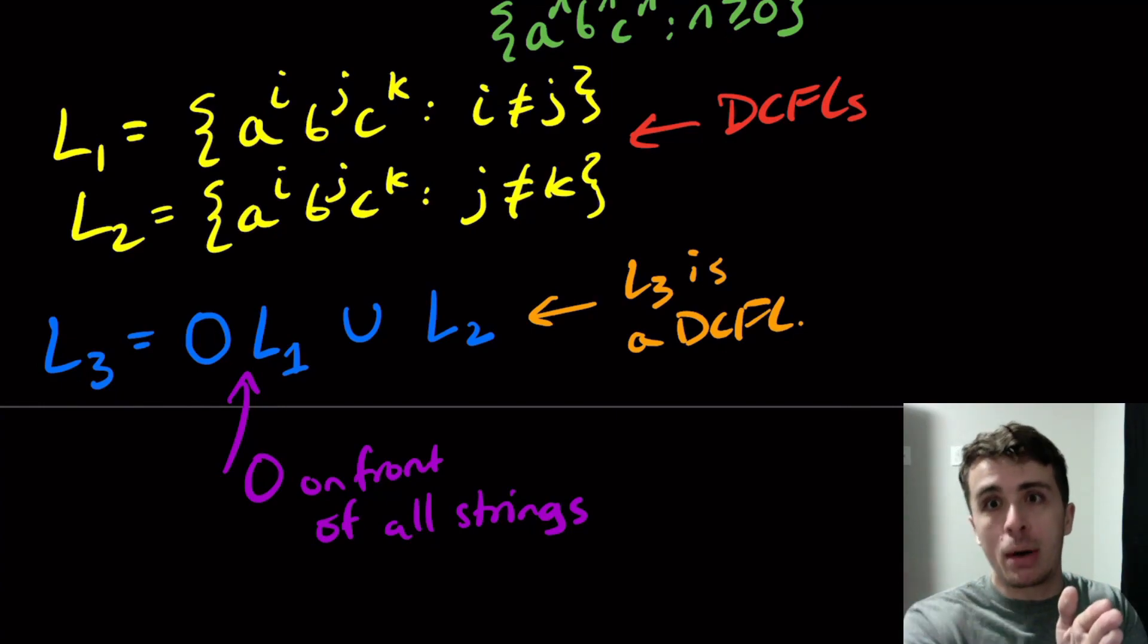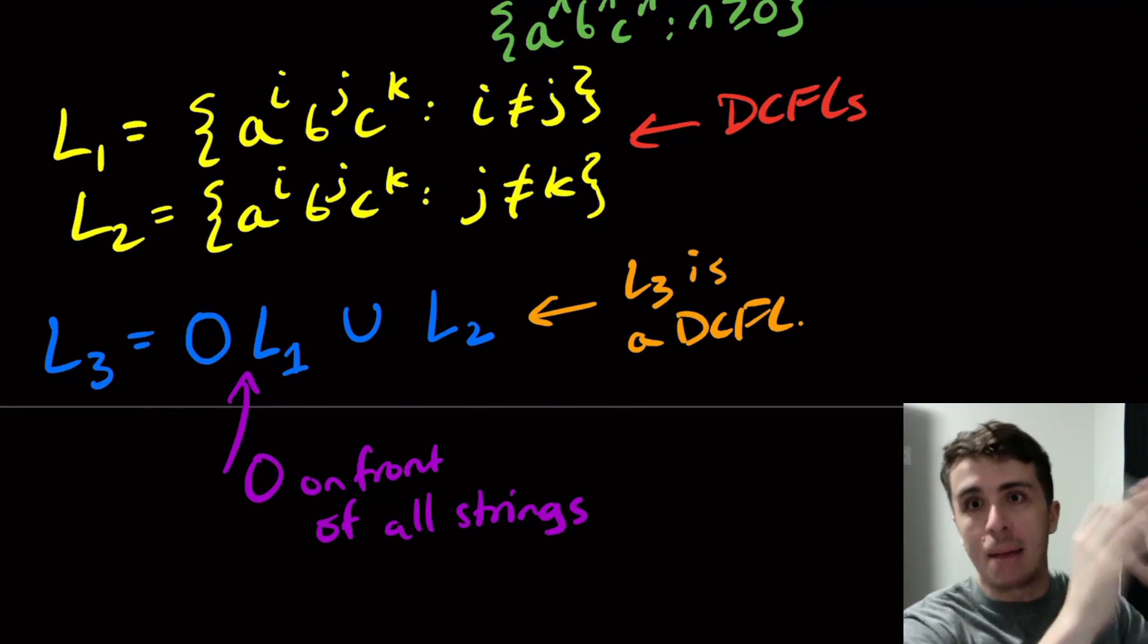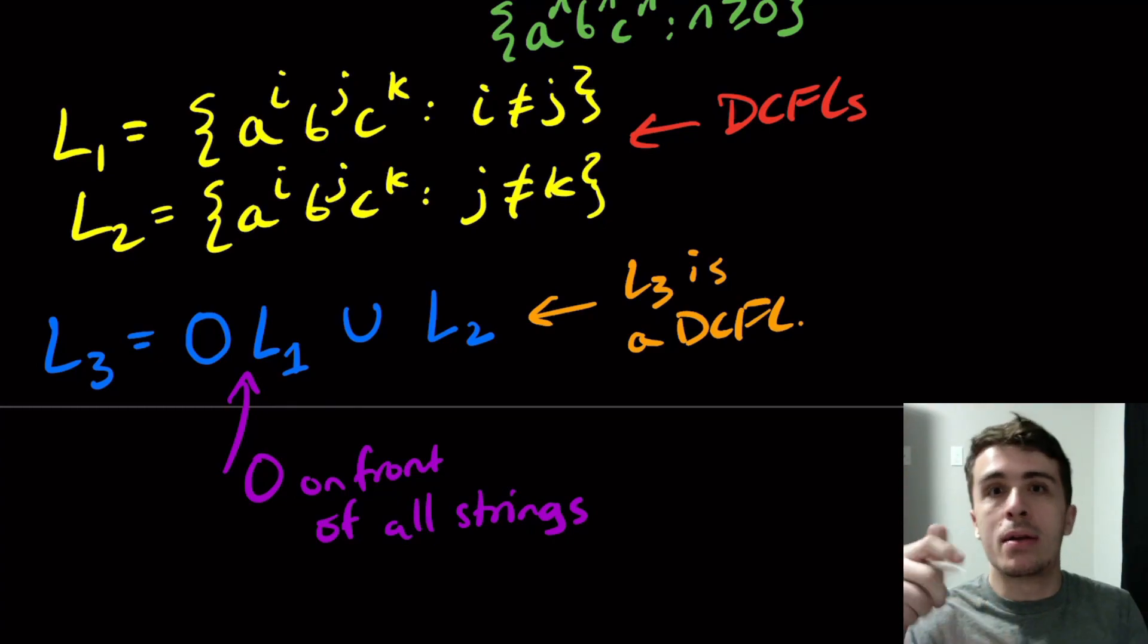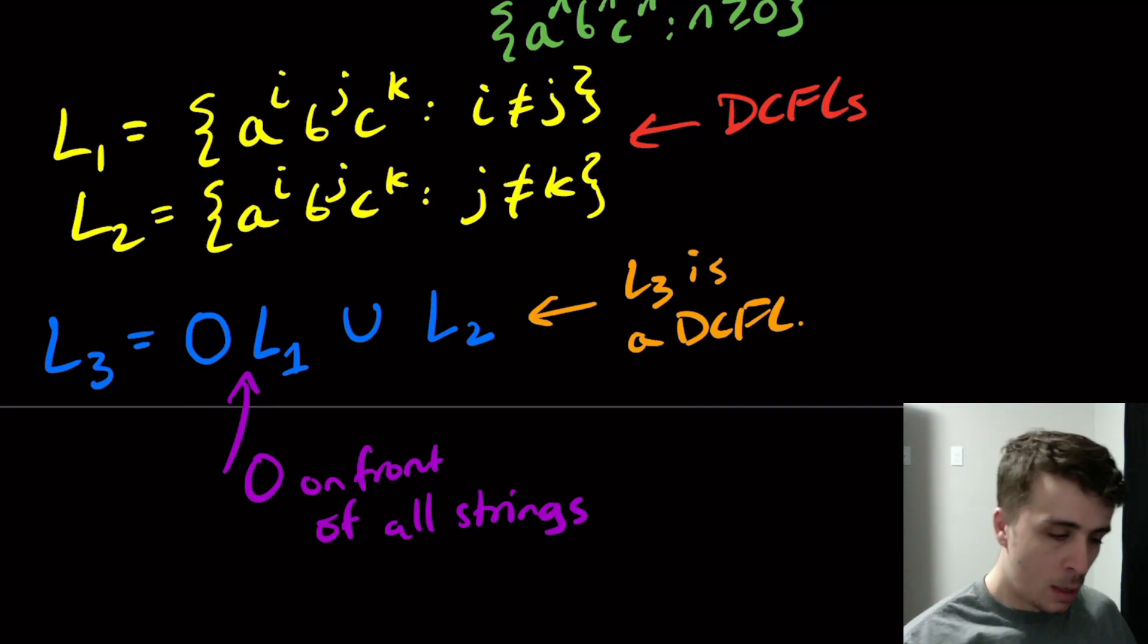And therefore, we can do this deterministically because I can just split what I'm doing into two parts. If I see a 0, I go this way. If I don't, I go this way and do L2. So I just copy and paste the DPDA for L2 for there, and the DPDA for L1 after I see the 0. And so therefore, it is a DCFL.